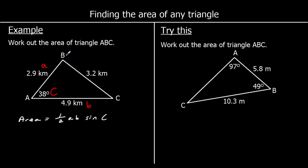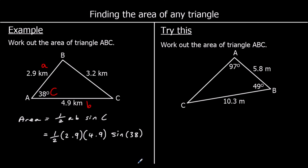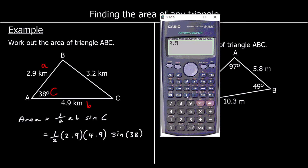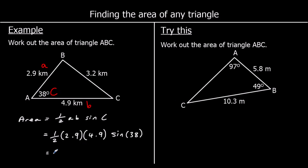Where the triangle is already labeled A, B, and C, we can ignore those labellings and use our own. The angle is big C, and the lengths are A and B. So let's substitute these values in: half times 2.9 times 4.9 sine 38. Typing that into the calculator gives 4.37 to two decimal places. The units are kilometers squared this time, and again to two decimal places.